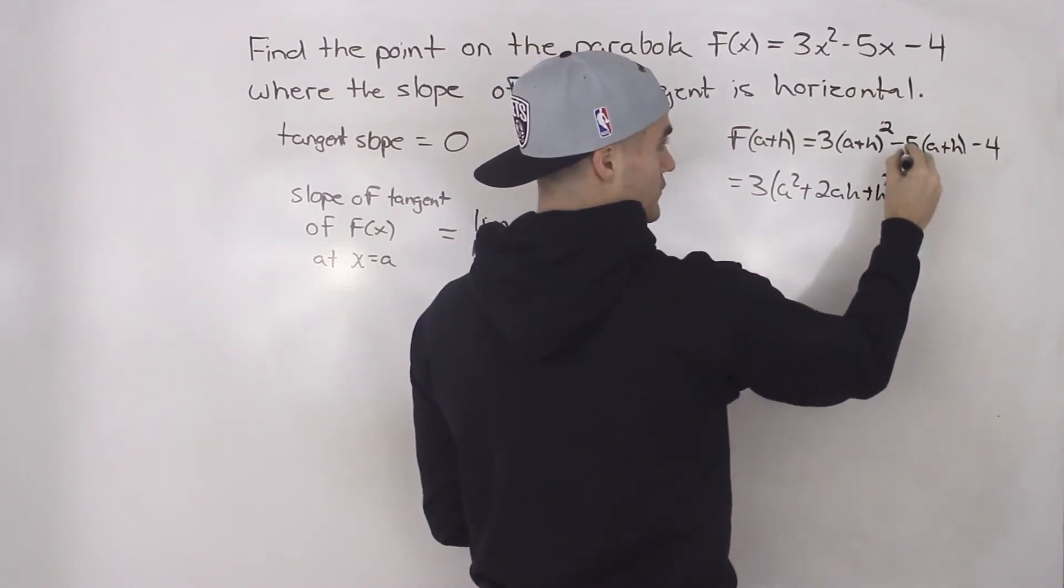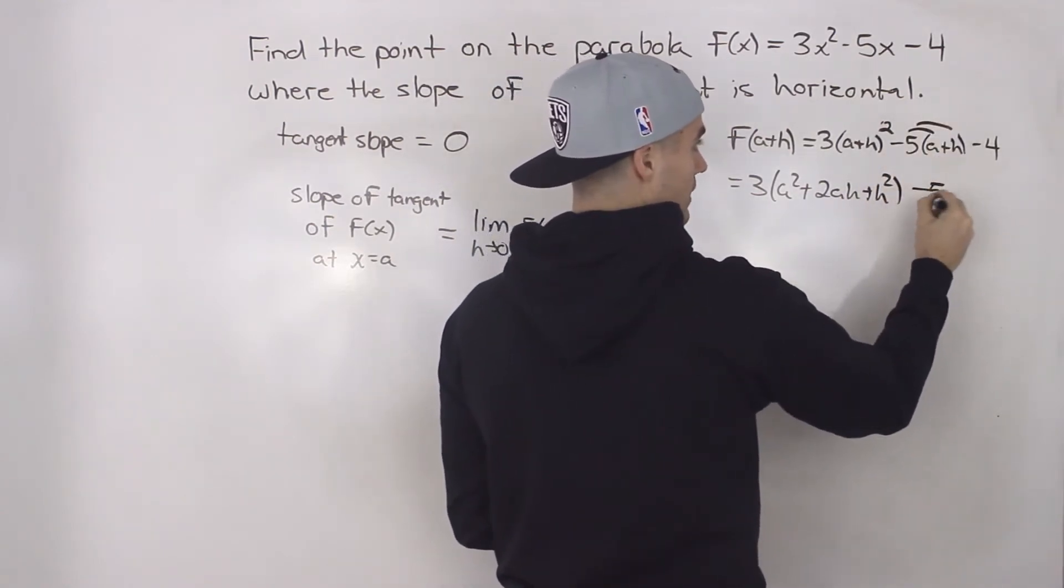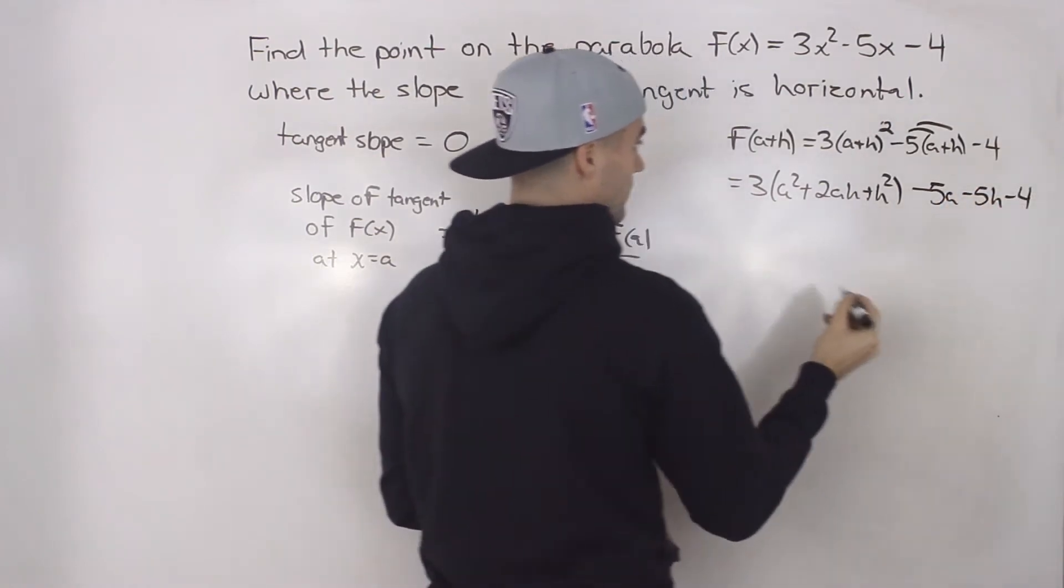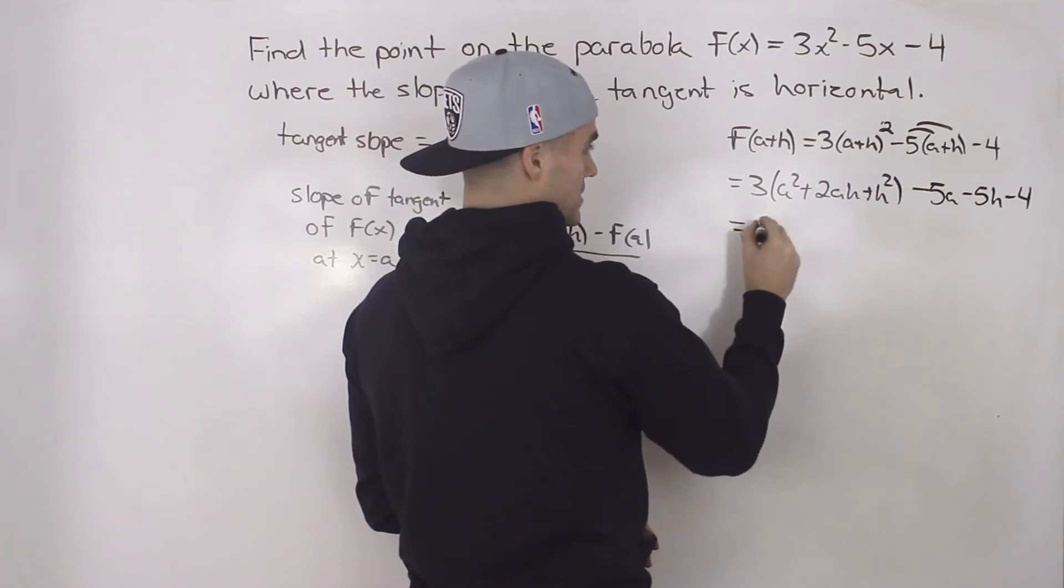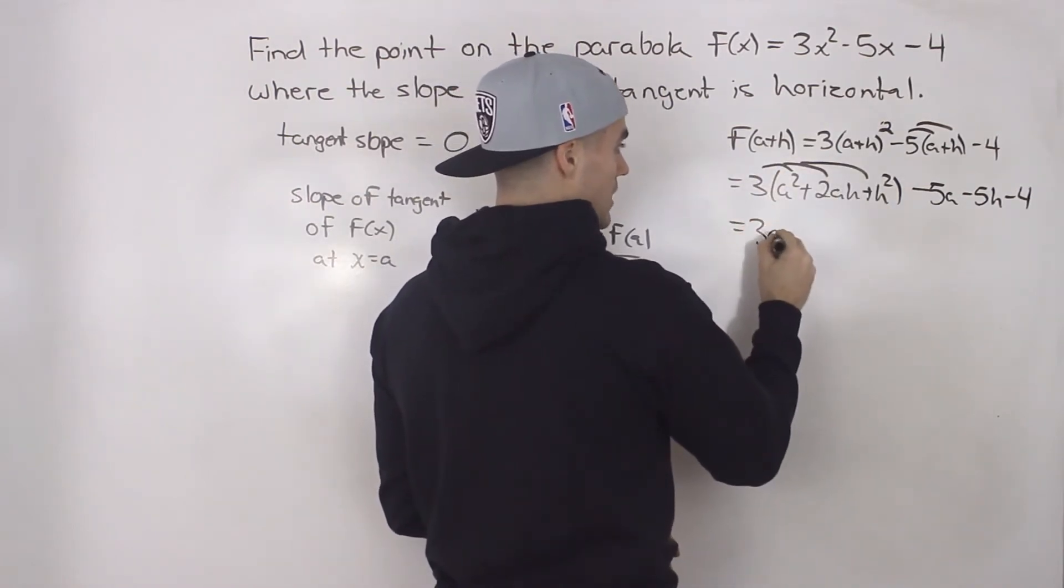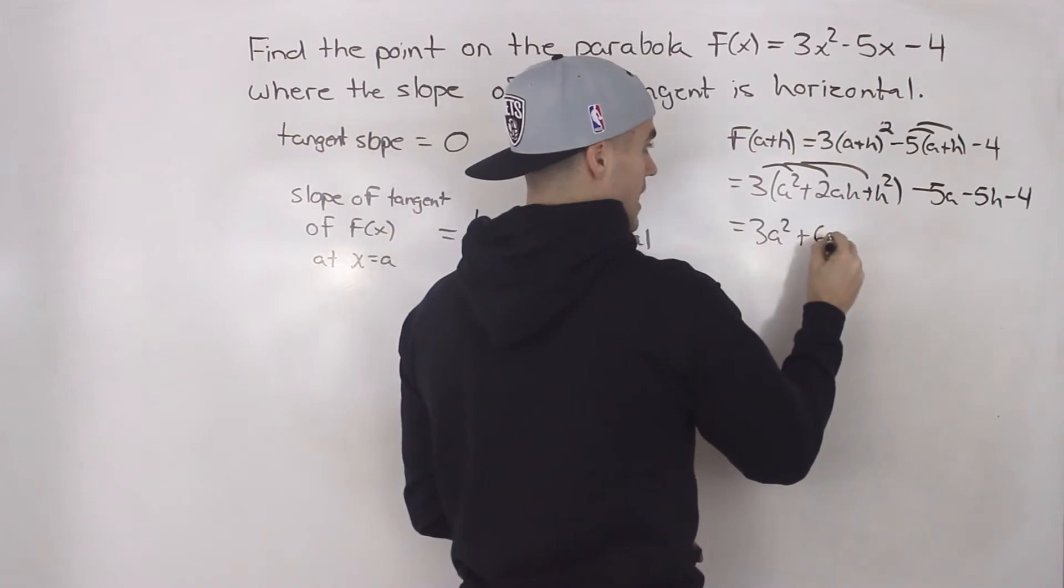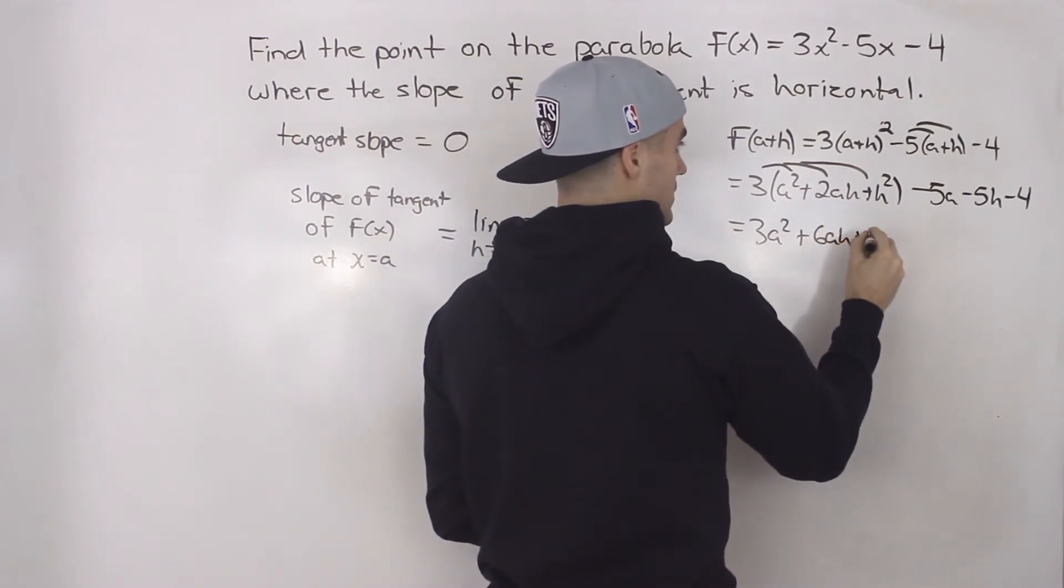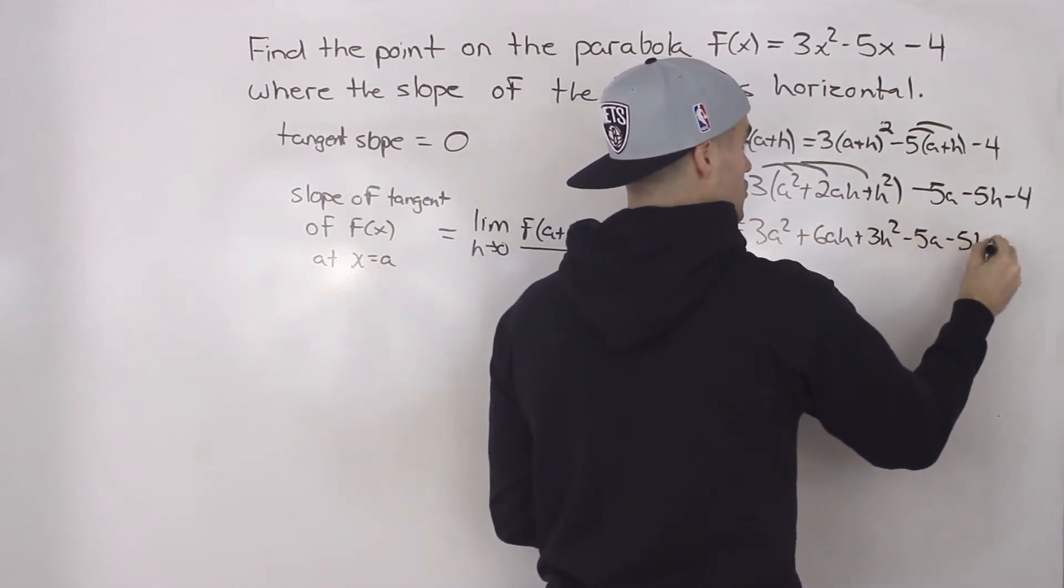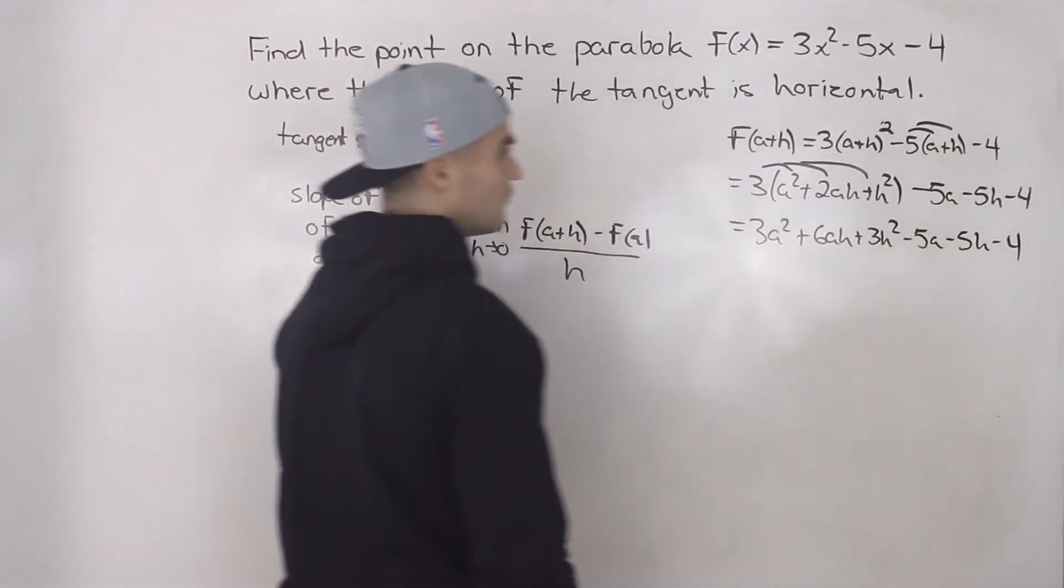Then we'll have to expand that negative 5 inside the bracket, -5a - 5h, and then we'll have -4 over here. So then we expand inside this bracket the 3. We'll have 3a² + 6ah + 3h² - 5a - 5h - 4.